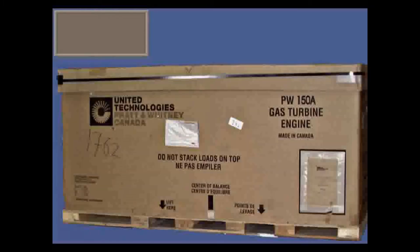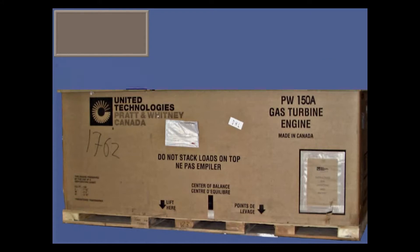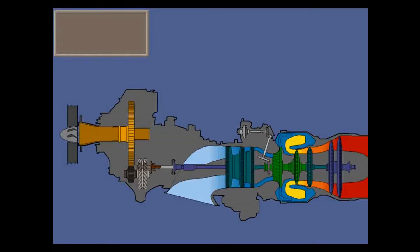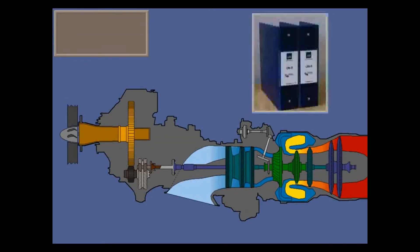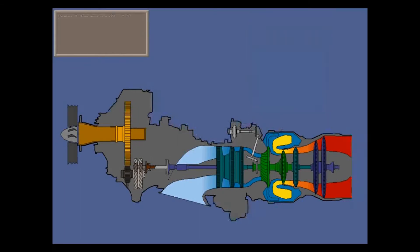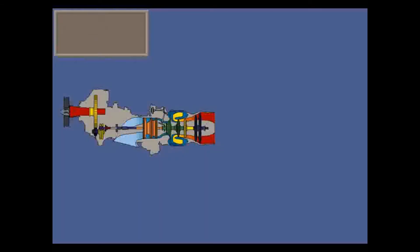In this module, we'll look at the engine and propeller systems of the Pratt & Whitney Model 150A engine for the Q400. We'll focus on operational principles and general understanding, not on technical details. Check your company manuals and documentation for exact specifications, configured options and figures. We'll look at the engine and propeller systems one by one.